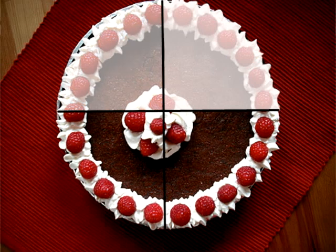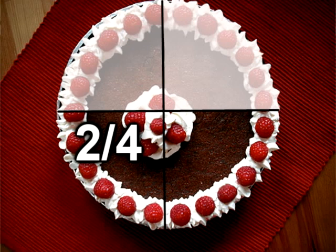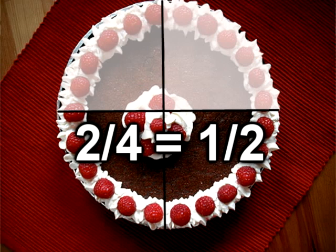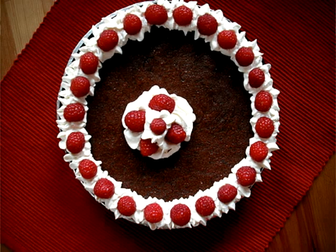Now if I eat 2 out of the 4 pieces, I've eaten 2 fourths of the cake. Think about that — take a look at the picture. That's actually the same as 1 half of the cake. If I had just cut it in half and eaten half of it — that will come up later when we're dealing with fractions. No matter how I cut this up, if I cut it into 8 pieces and ate 1, I would eat 1 eighth of the cake. It's always going to work that way — it's part out of whole.